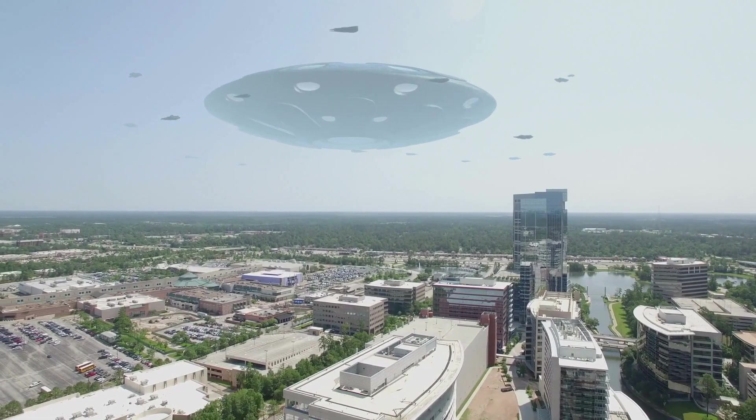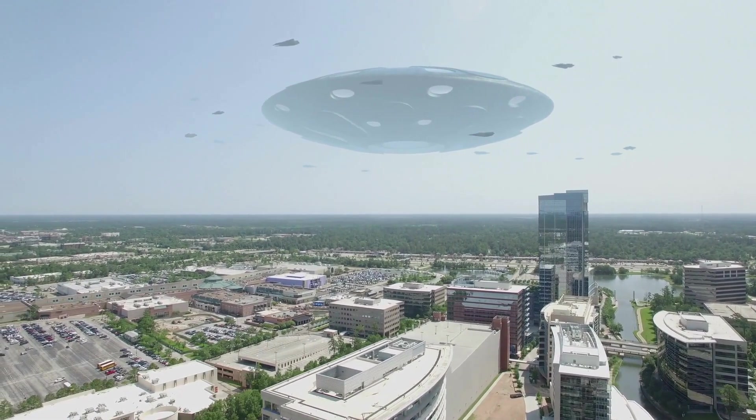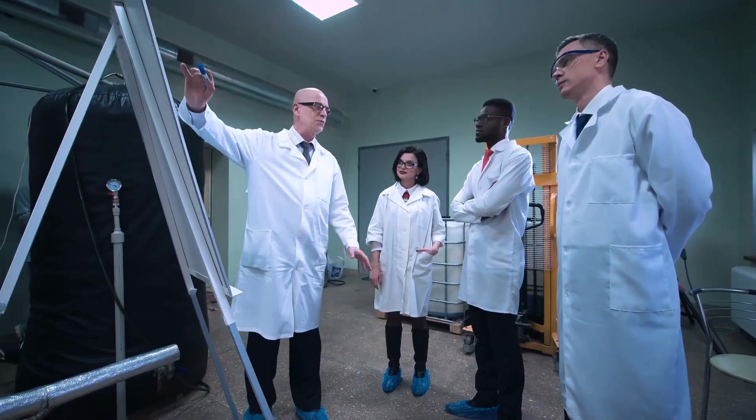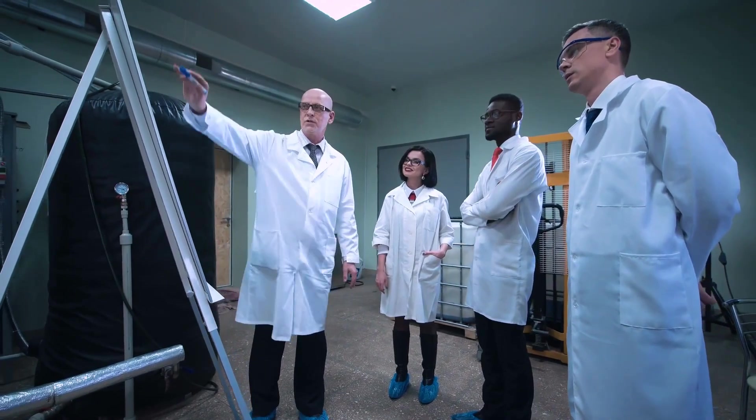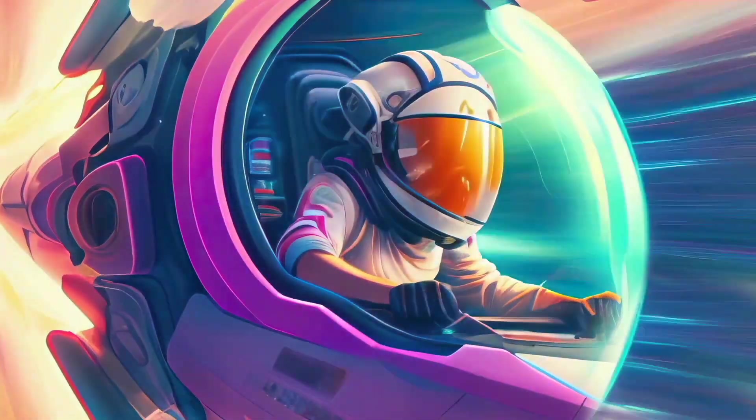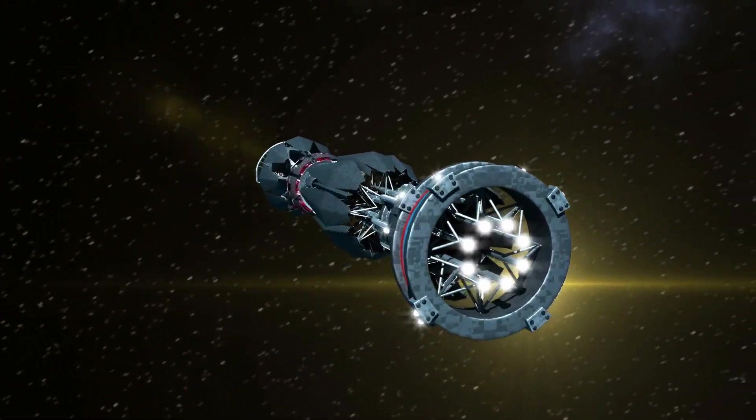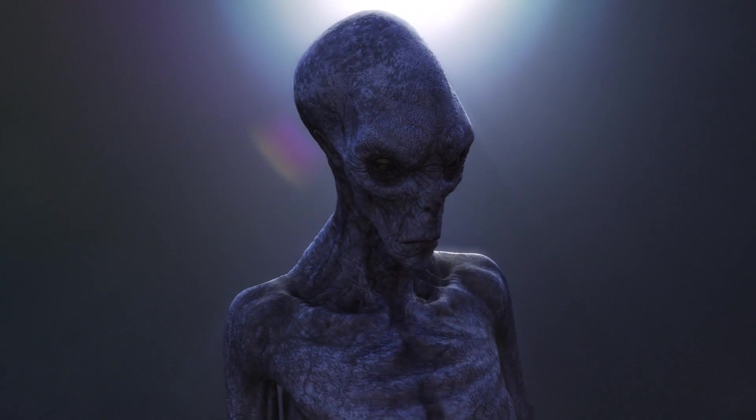But here's the tricky part. How do they move from one place to another if nothing can go faster than light? Scientists have been scratching their heads over this for ages. Luckily, they've come up with some ideas that sound a bit like stuff from movies. So get ready for a space adventure as we explore this mystery, just like those aliens who keep landing on Earth by accident.